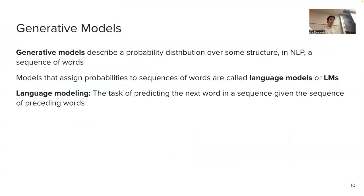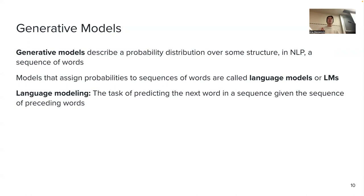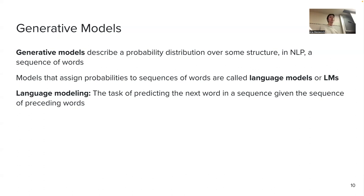Generative models — as opposed to discriminative models that model the conditional probability of a label — describe a probability distribution over some structure. In NLP, we care about sequences of tokens, so generative models assign probabilities to sequences of tokens. Models that assign probabilities to sequences of words are called language models, abbreviated LMs. Adding 'large' gives us LLMs. The language modeling task is predicting the next word in a sequence given the preceding words.